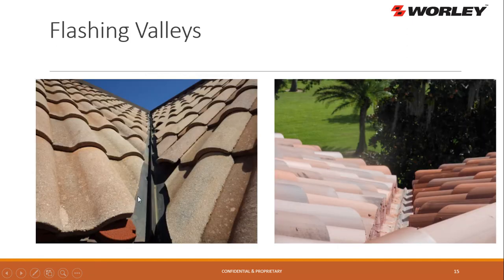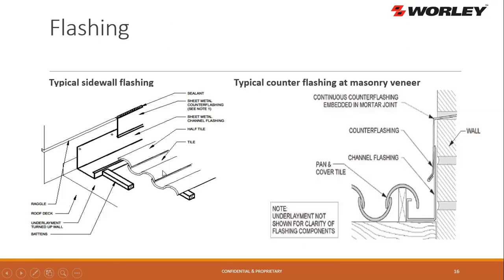For valleys, we've got cut valleys with a metal flashing pan. Sometimes you'll see it where they actually cut the tile and stuff it with mortar — that's pretty common. For wall flashings, you'll see sheet metal counter flashing over a sheet metal channel pan. The tile comes up to it on the battens, and then you get a half cap over the tile and the pan. There's your counter flashing, channel flashing, and the tile run, then you put the cap on top.